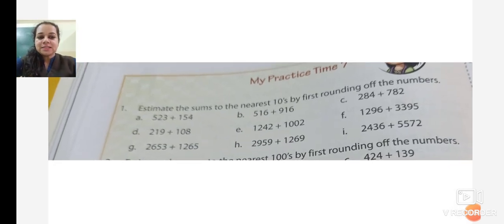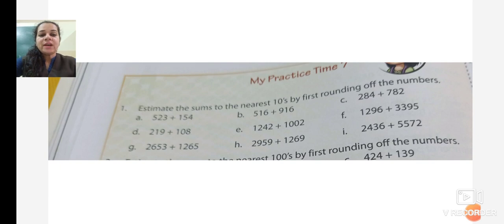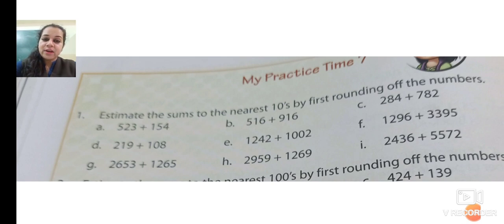As you can see in the textbook there are questions given, but there is no space to solve the sums in the textbook. So today we will be solving the sums in the notebook. Question 1: Estimate the sums to nearest tens by first rounding off the numbers. What we have to do? Estimate the sums — that means we have to find the addition.